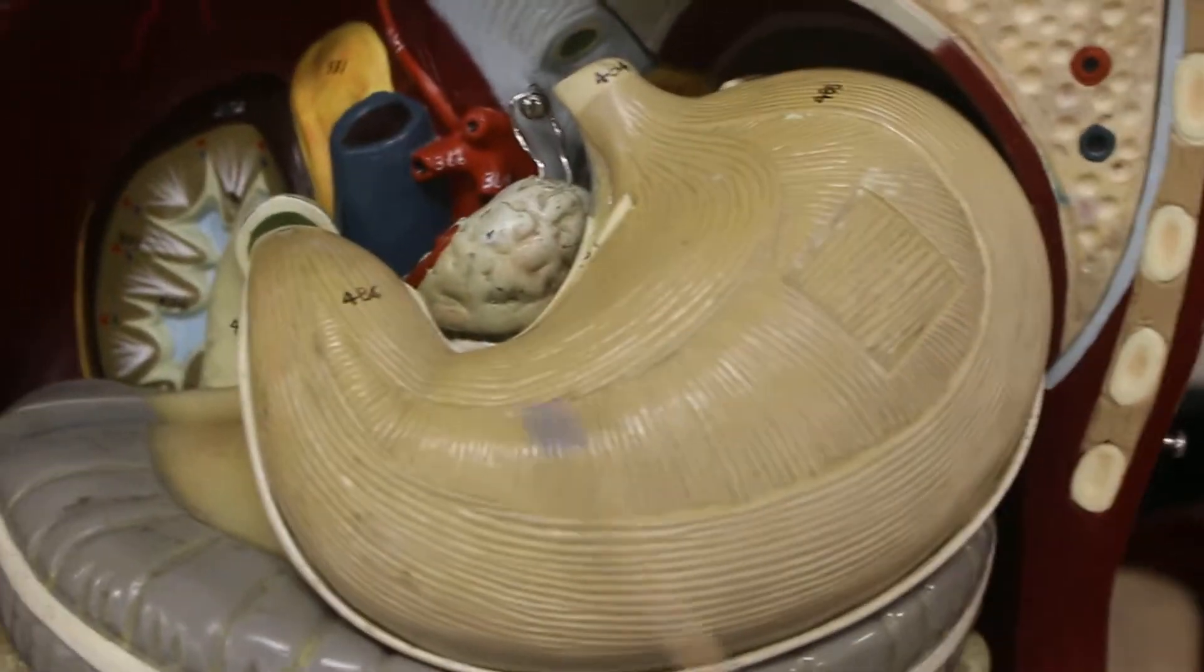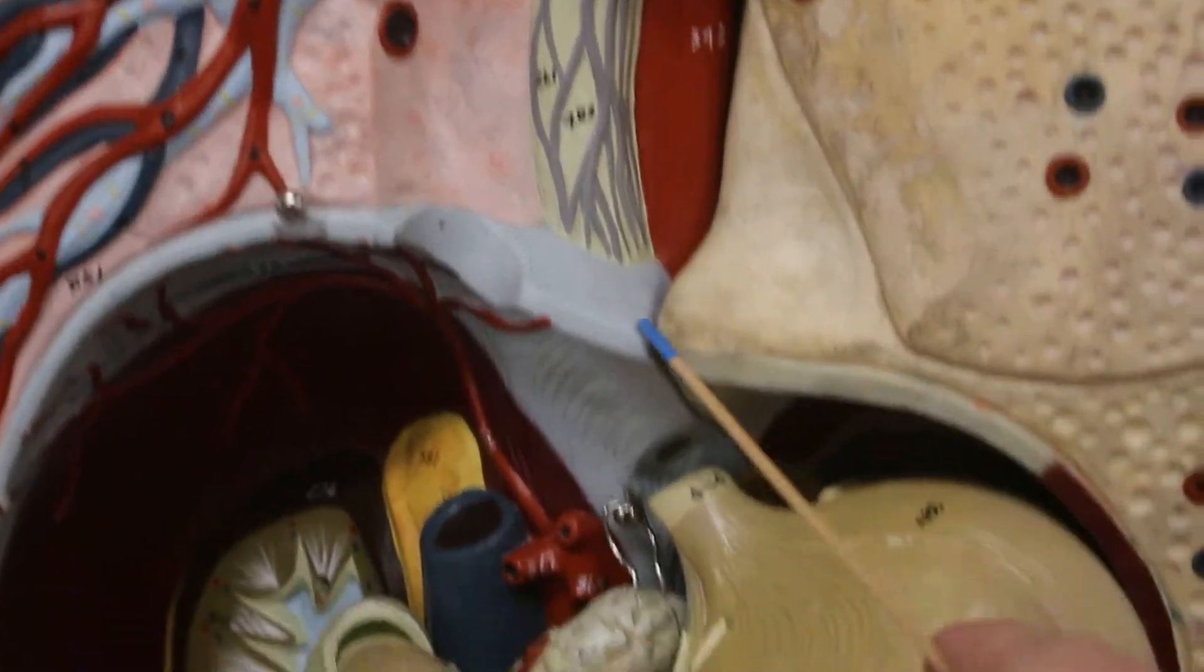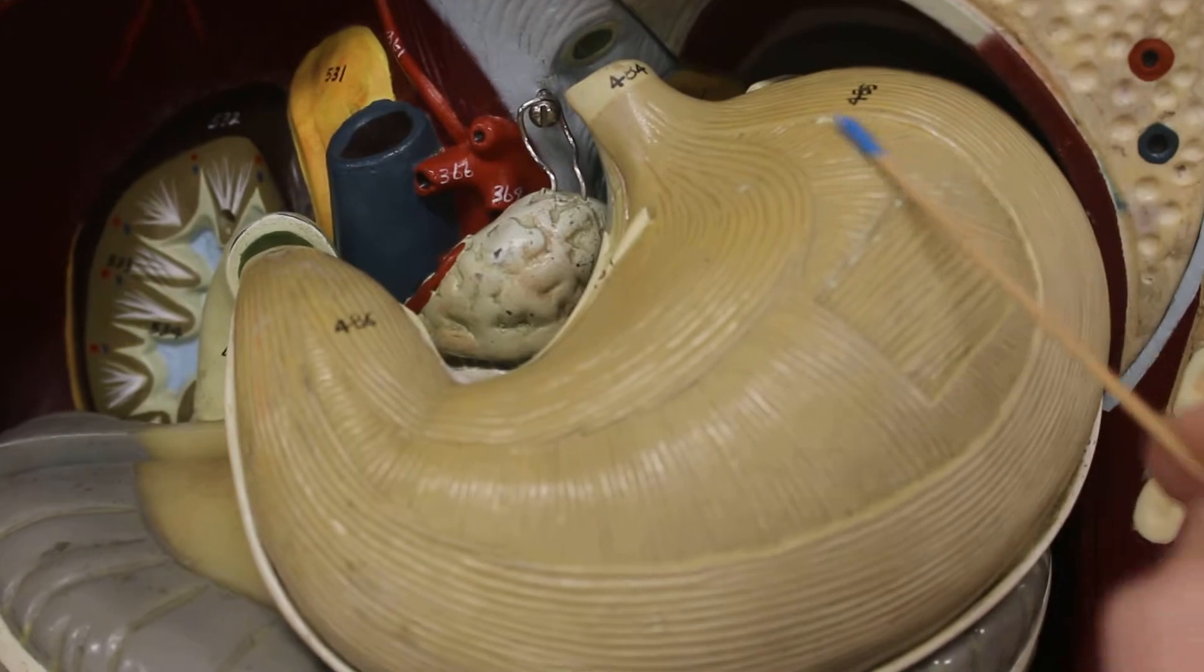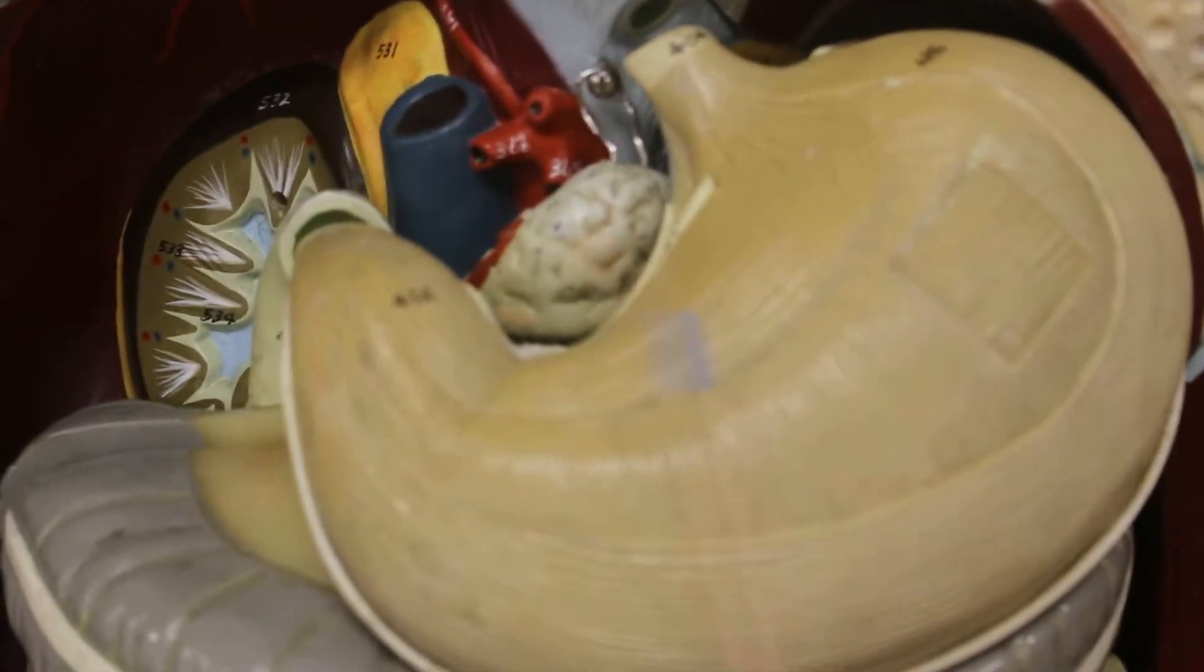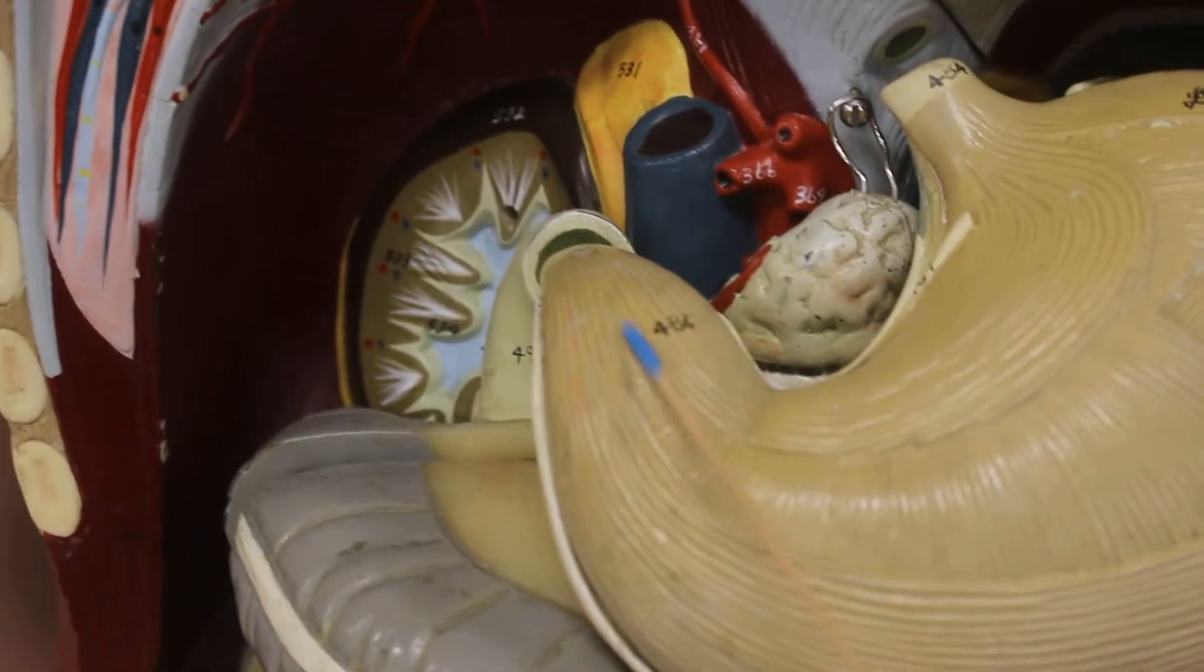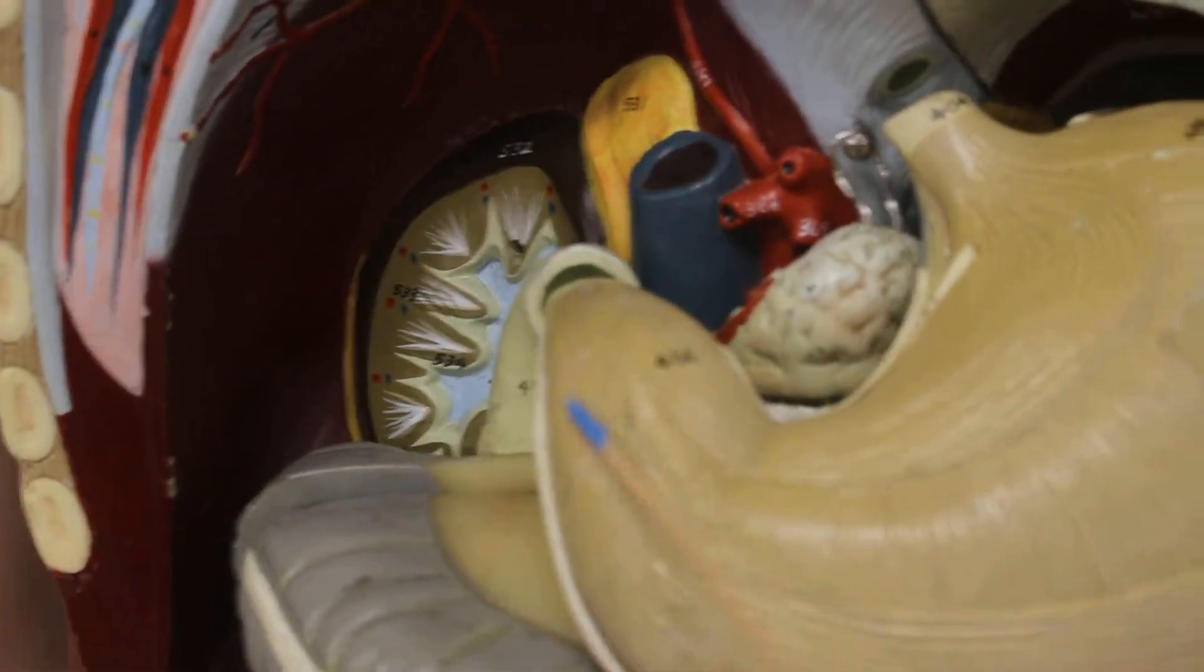Here is the stomach. So the esophagus connects to the stomach. This upper hump here is the fundus. This is the body, all of this area. And then the bottom portion of the stomach here is the pylorus.